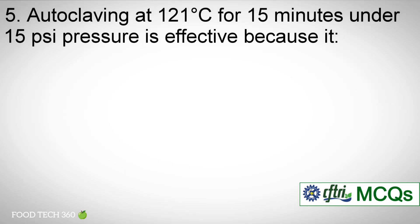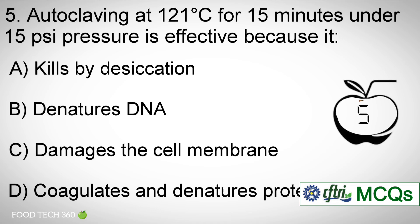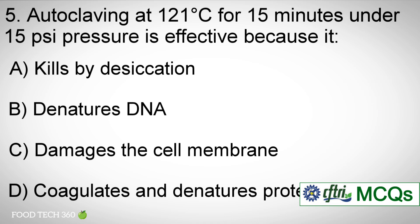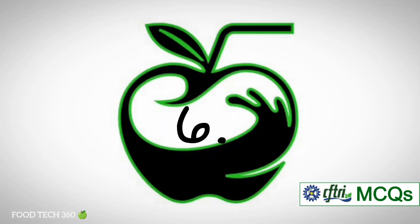Question number 5. Autoclaving at 121 degrees Celsius for 15 minutes under 15 psi pressure is effective because it: Options: A. Kills by desiccation, B. Denatures DNA, C. Damages the cell membrane, D. Coagulates and denatures protein. Correct answer: D. Coagulates and denatures protein.